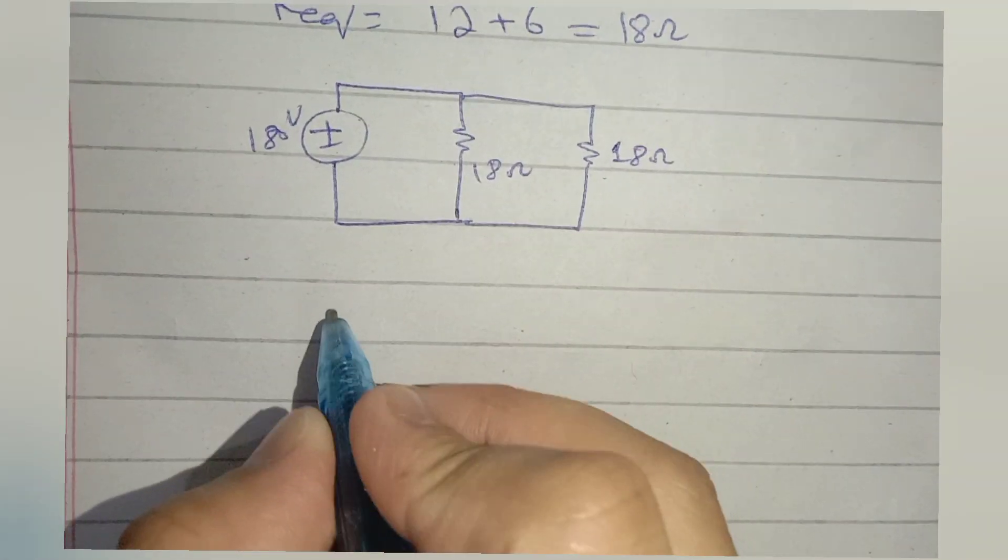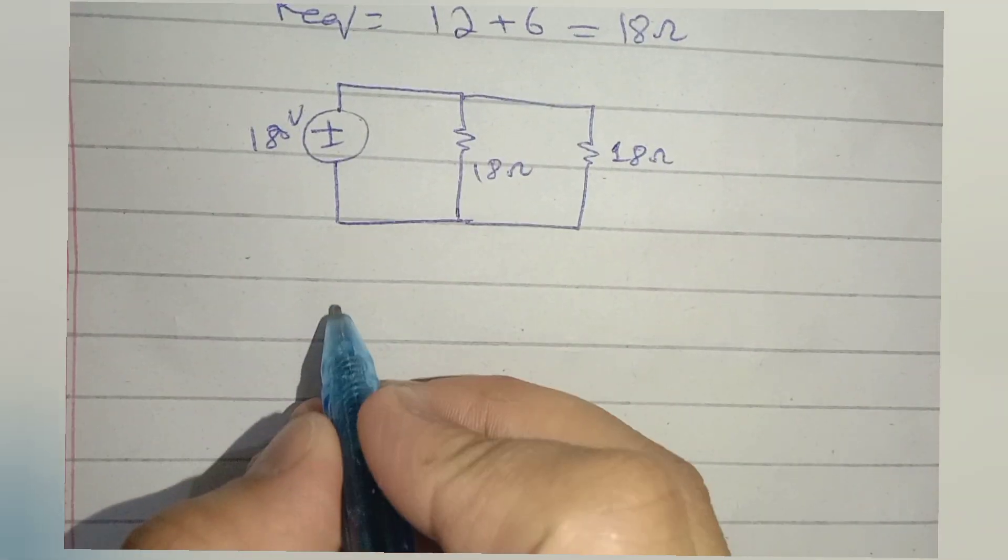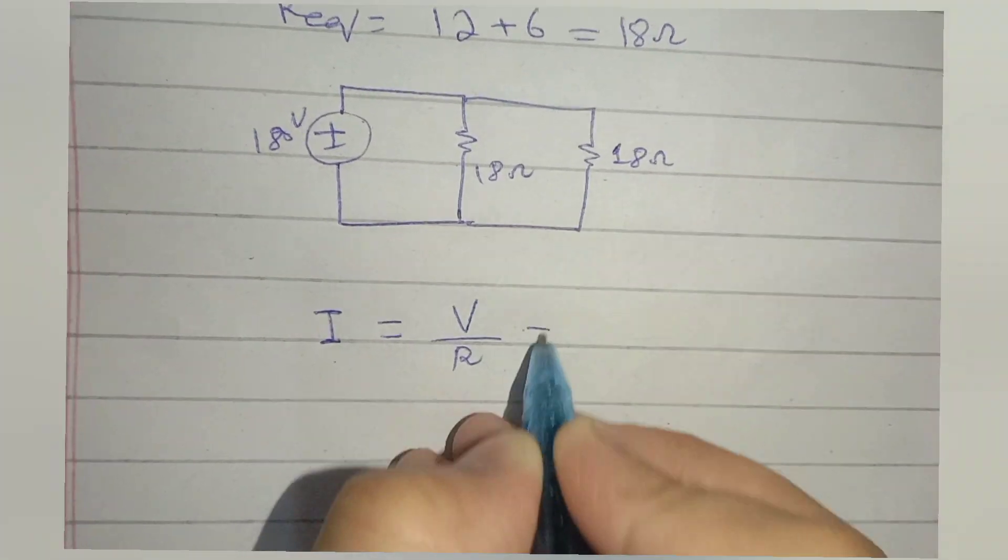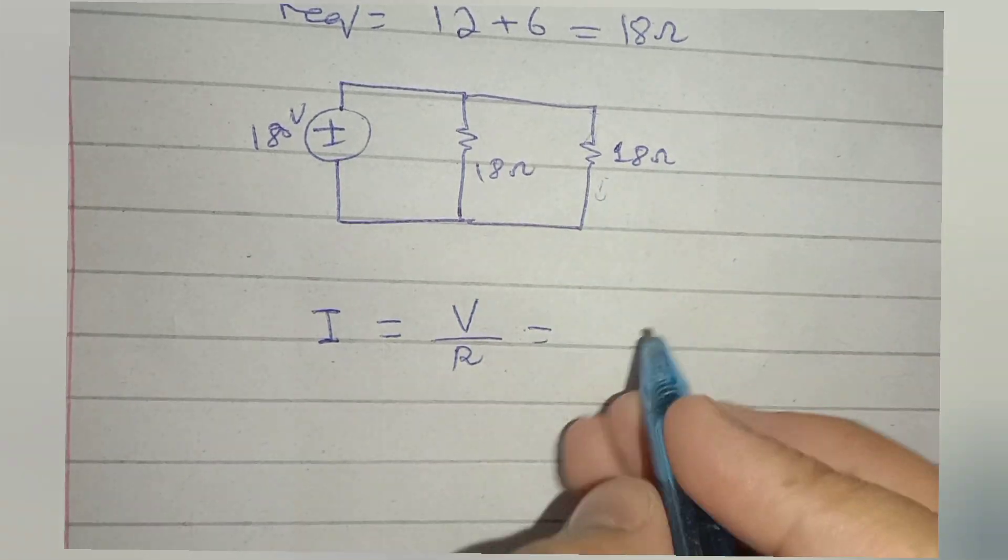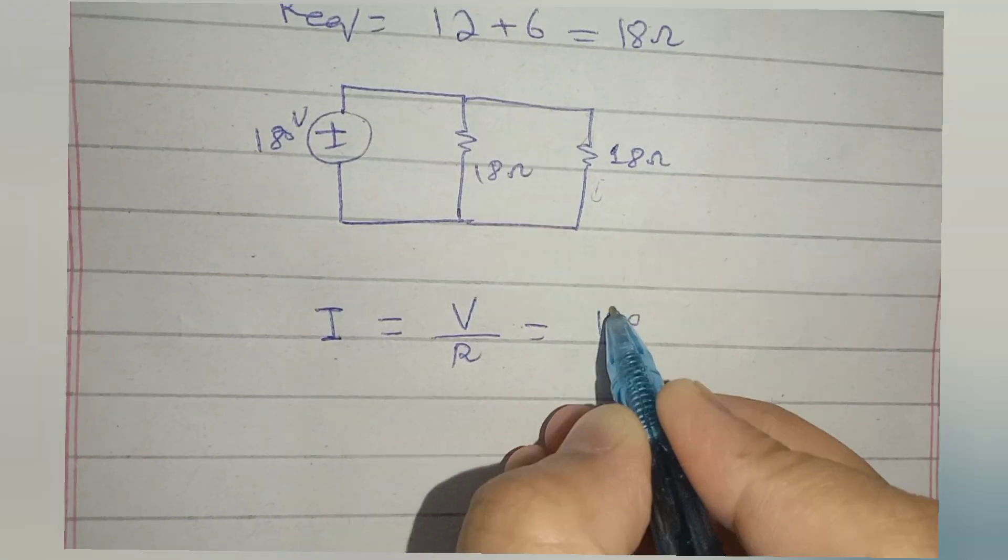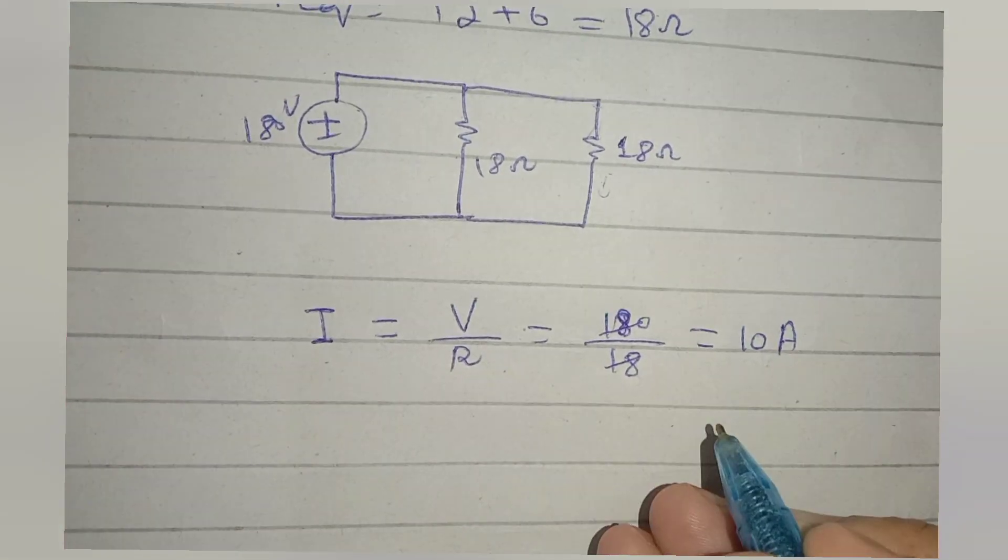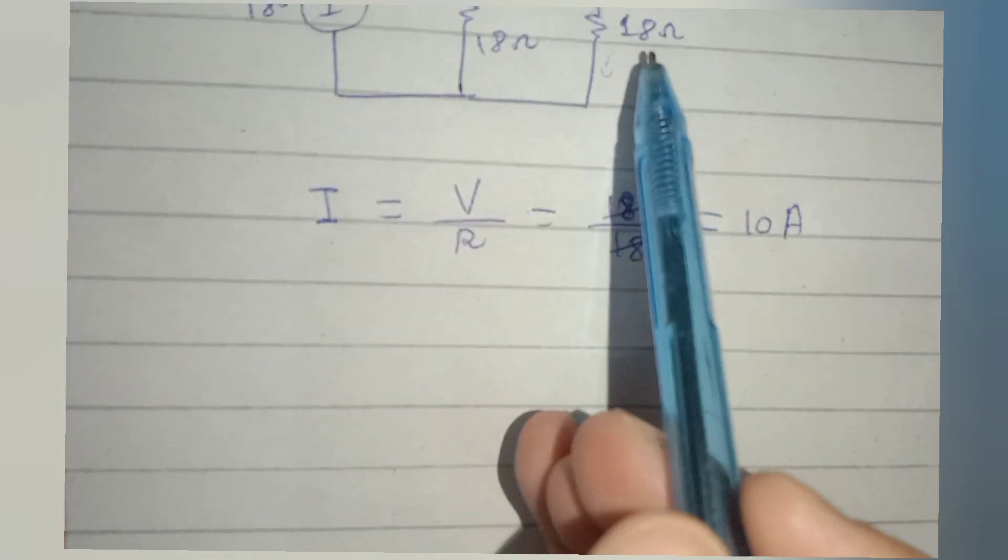The equation to find current is I equals V over R. Put the values: 180 over 18, and current calculated is 10 amperes. As 12 ohm and 6 ohm resistors are in series, current in both resistors will be 10 amperes.